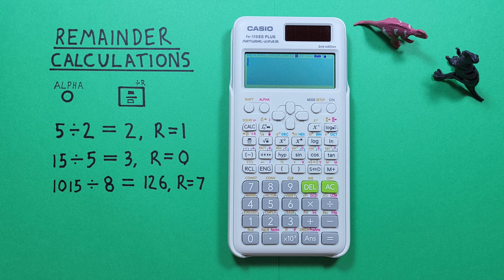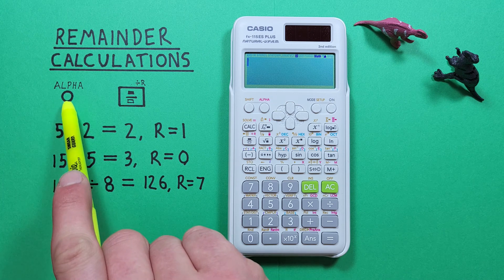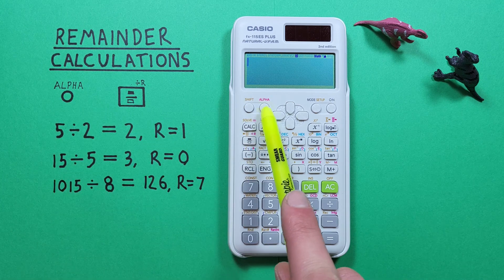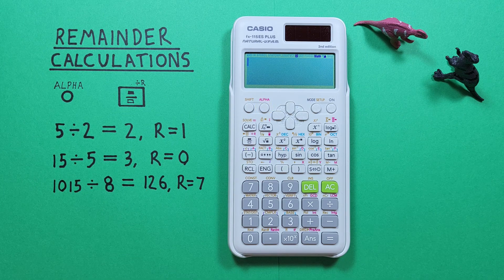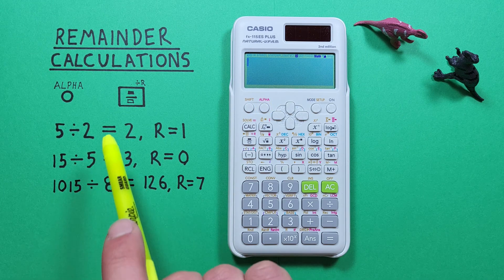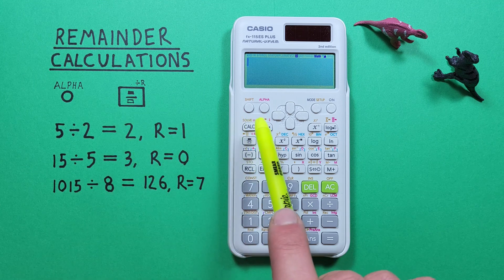To do that we'll use the alpha key that looks like this located here and the fraction key with the alpha function of remainder that looks like this located here.